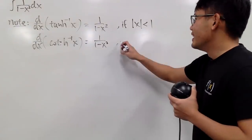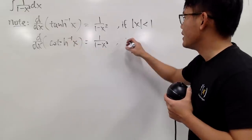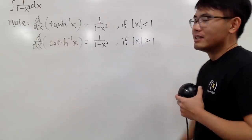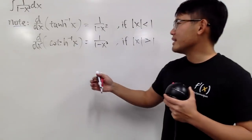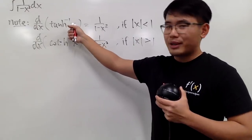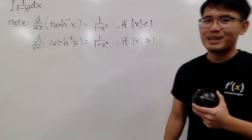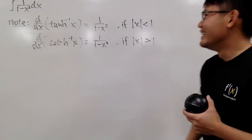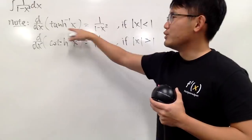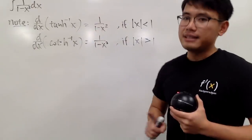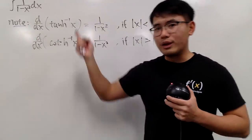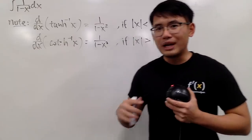For the inverse hyperbolic cotangent, the domain is the greater-than-1 version. So, for example, if you have to plug in 5 for x, you will have to use the inverse hyperbolic cotangent to make sense. Plugging 5 into the inverse hyperbolic tangent doesn't make sense at all — unless we're talking about complex numbers, but we're not. If x is equal to 1, you will get an improper integral, so you have to do more investigation.